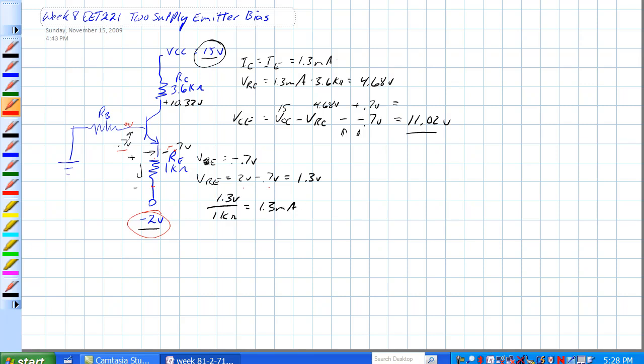Voltage across RC is 1.3 milliamps times 3.6k ohms, which is 4.68 volts. Voltage collector to emitter is VCC minus the VRC, minus a negative 0.7 volts. And so we've got 15 volts minus 4.68 volts plus 0.7 volts equals 11.02 volts VCE.